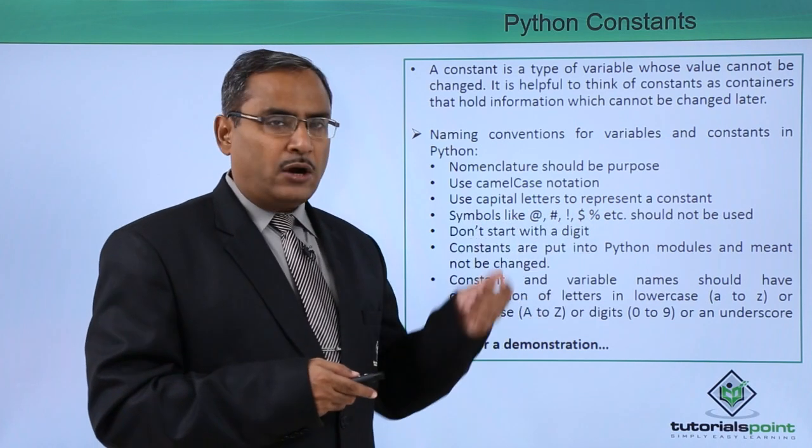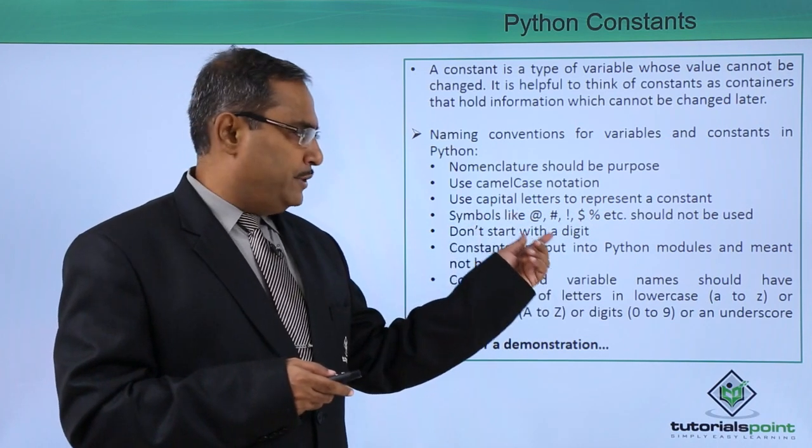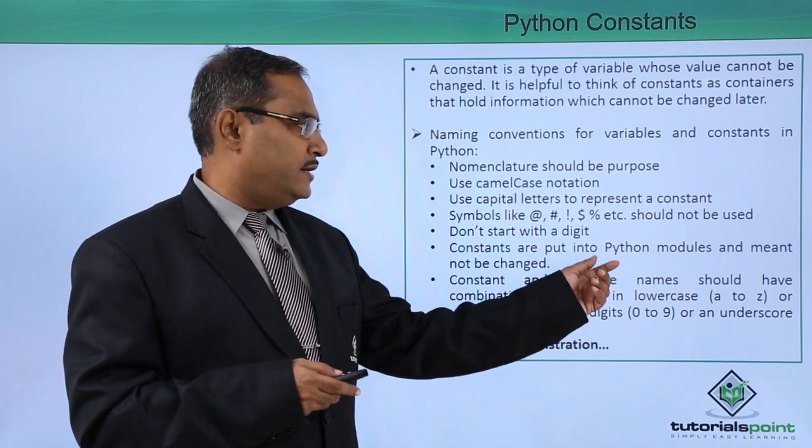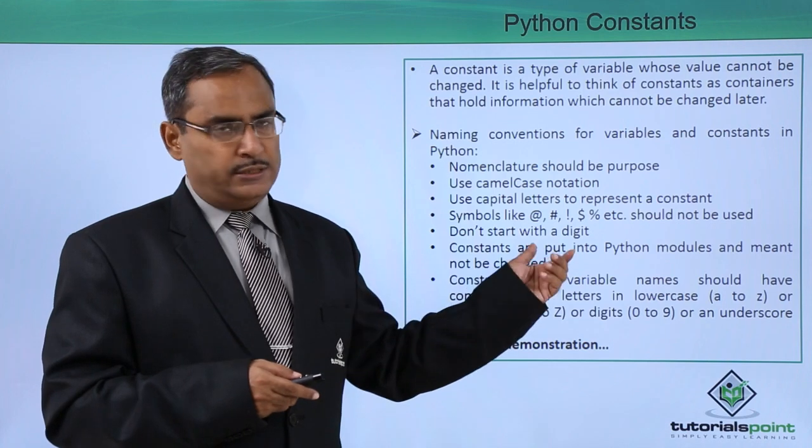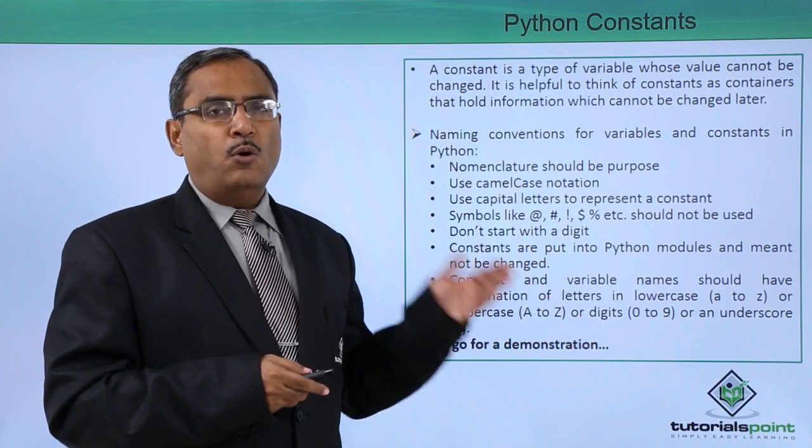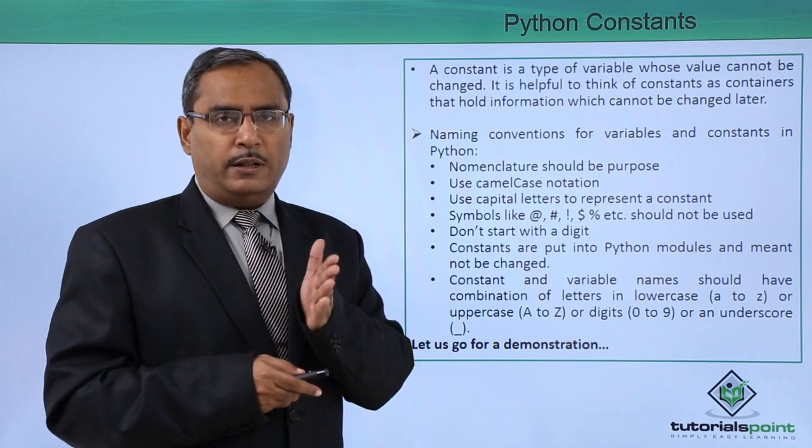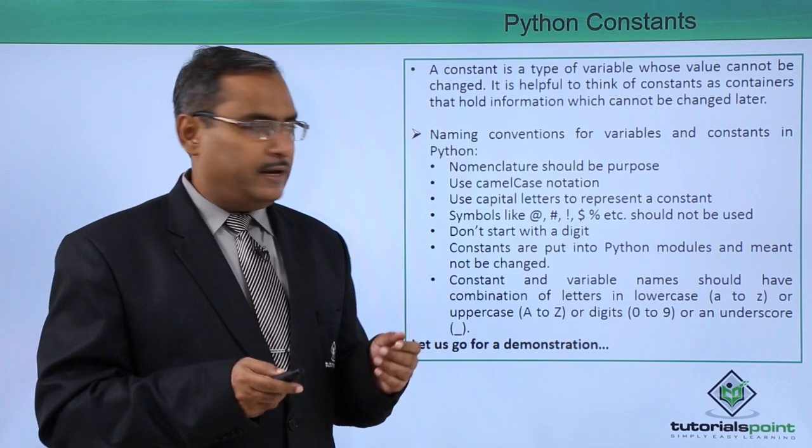Use capital letters to represent a constant. Symbols like @, #, !, $, % etc. should not be used. Do not start with a digit. In the previous video we have shown you that 1variable is not a valid variable name but variable1 is a valid variable name.